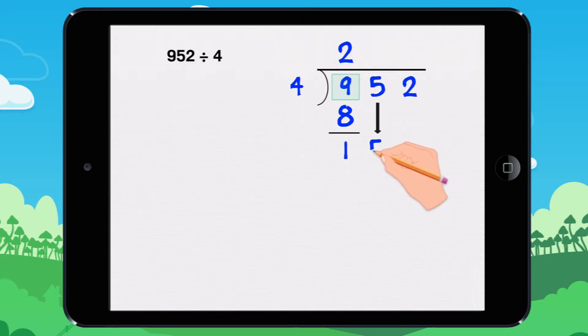Bring down a 5. 4 goes into 15 how many times? 3 times, because 3 times 4 equals 12. 3 times 4 equals 12.